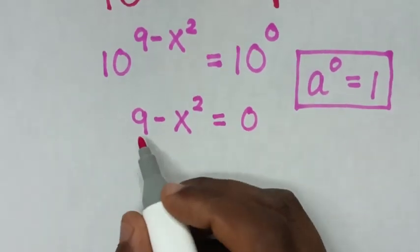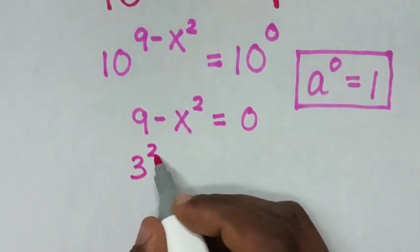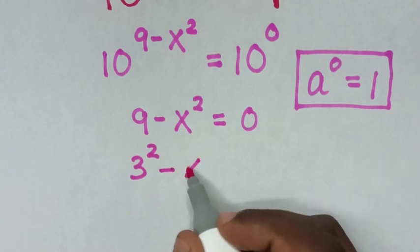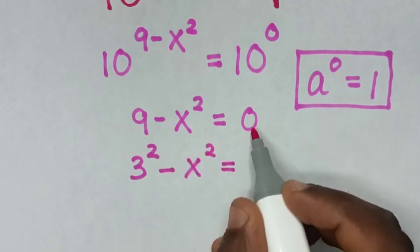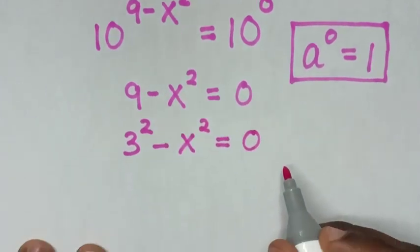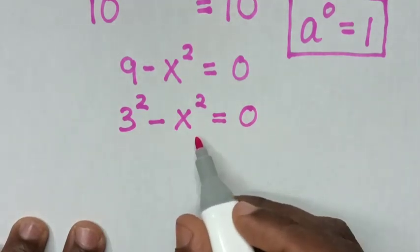In the next step, 9 is the same as 3 squared, then minus x squared equals 0. From here, this is a perfect square.